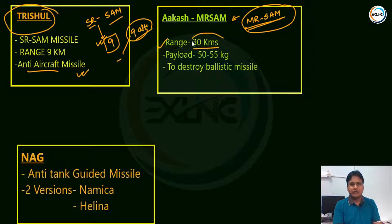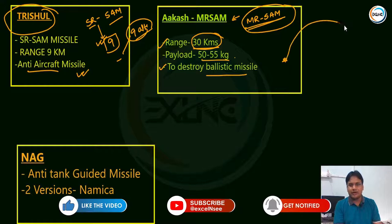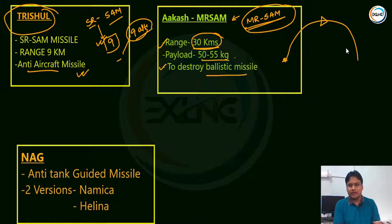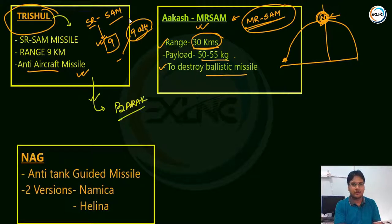Mr. SAM can reach 30 km altitude, with a payload capacity of 50-55 kg. It is used to destroy ballistic missiles - for example those from Pakistan flying on a parabolic trajectory - using the Akash system. The Trishul system has been replaced by the Israeli Barak missile system. So in summary: short range surface-to-air Trishul has 9 km range, and medium range Akash has 30 km altitude. Ballistic missiles are destroyed using the Akash system.